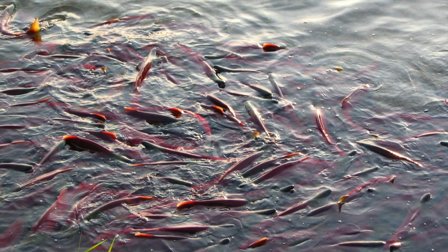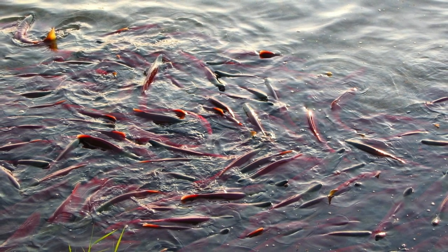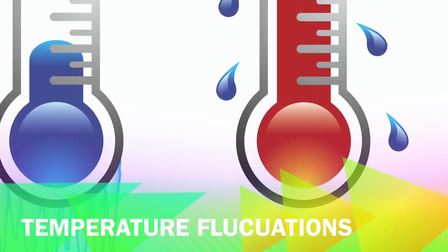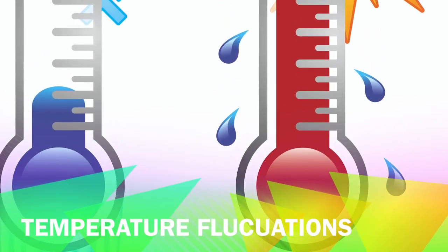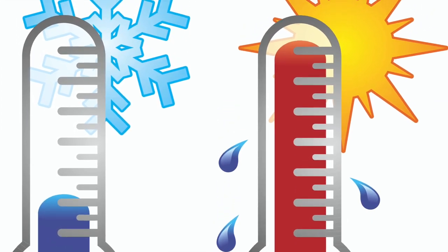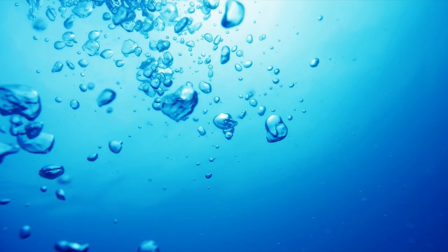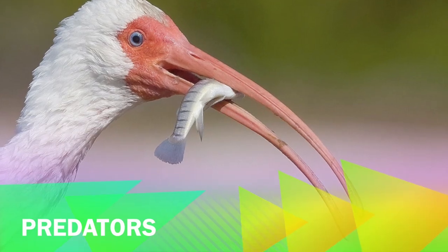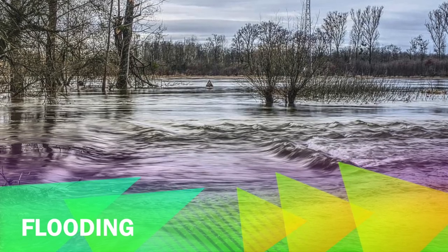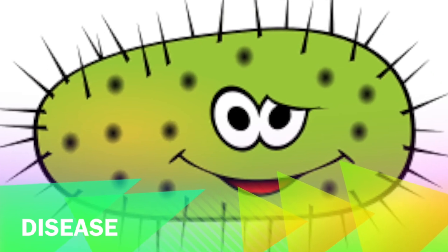Not all fish survive long enough to reach adulthood and reproduce. There are some threats that they face that might shorten their life expectancy, such as drastically changing water temperatures that go from cold to hot in short amounts of time, not having enough oxygen to breathe in the water, being eaten by predators, flooding carrying them out of their normal habitat, or disease.